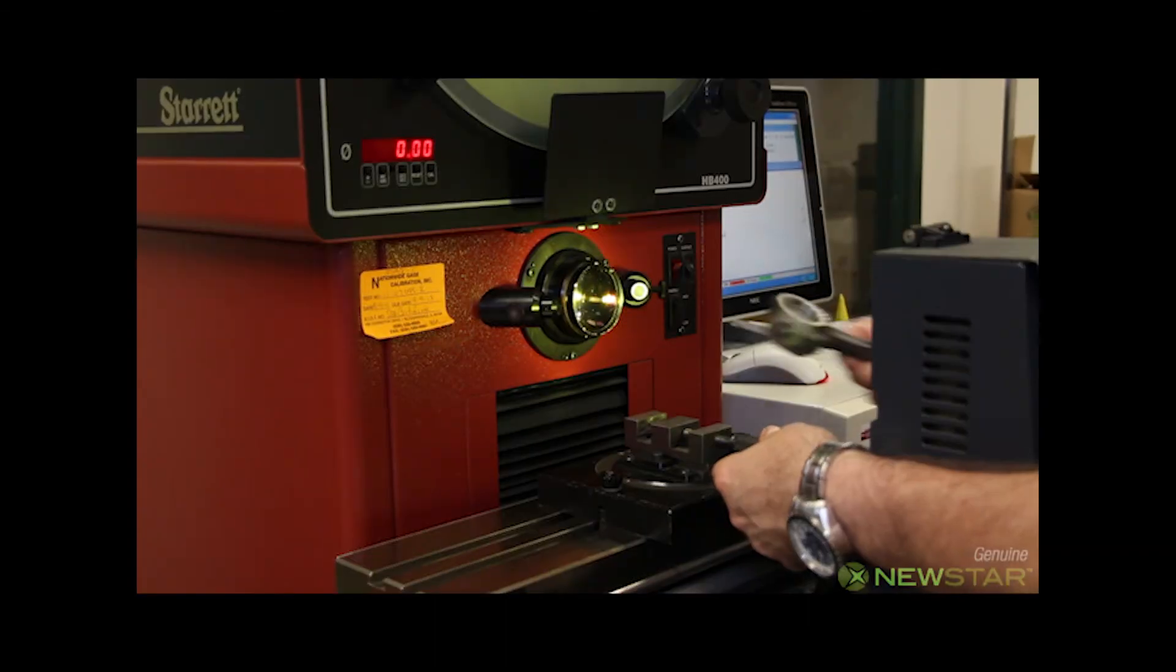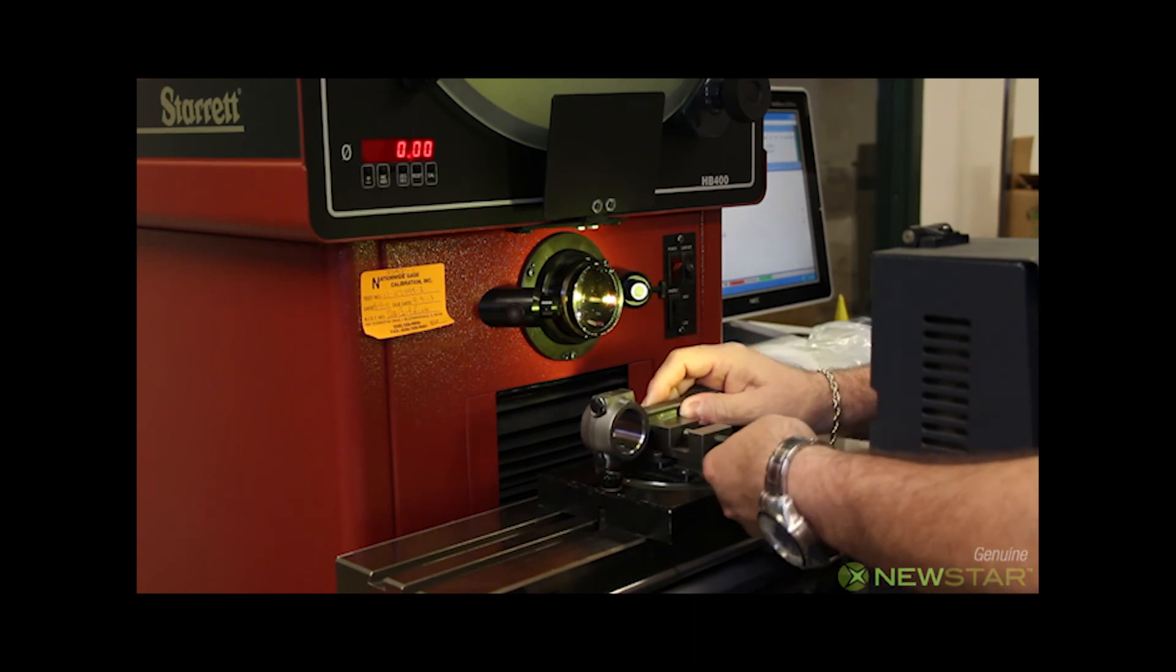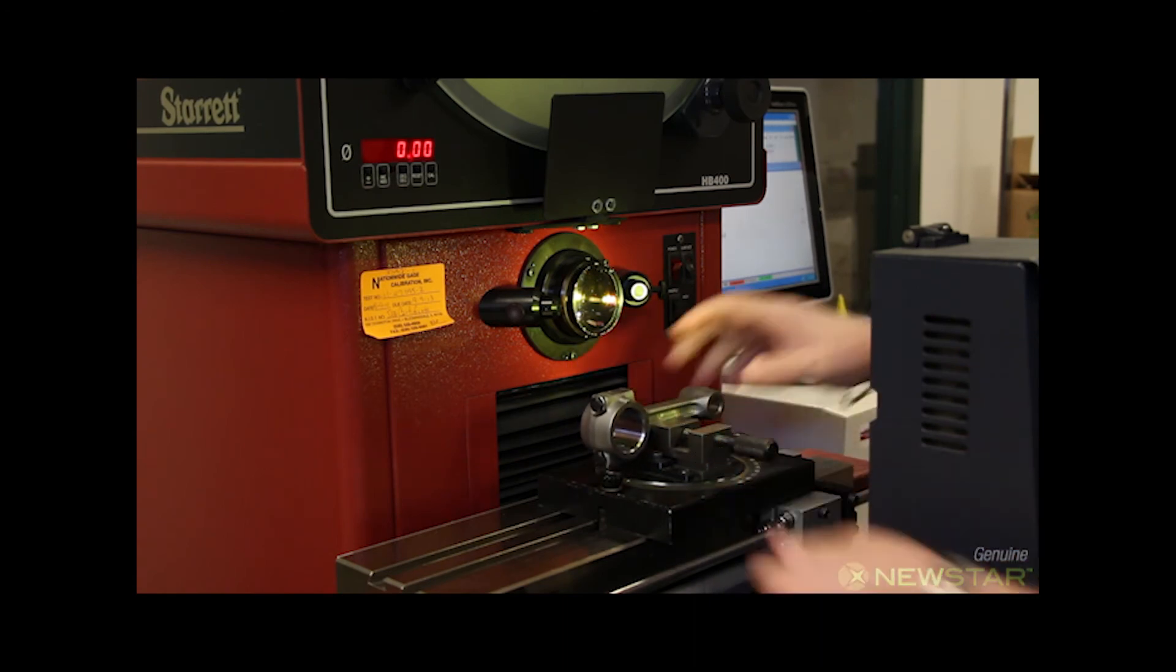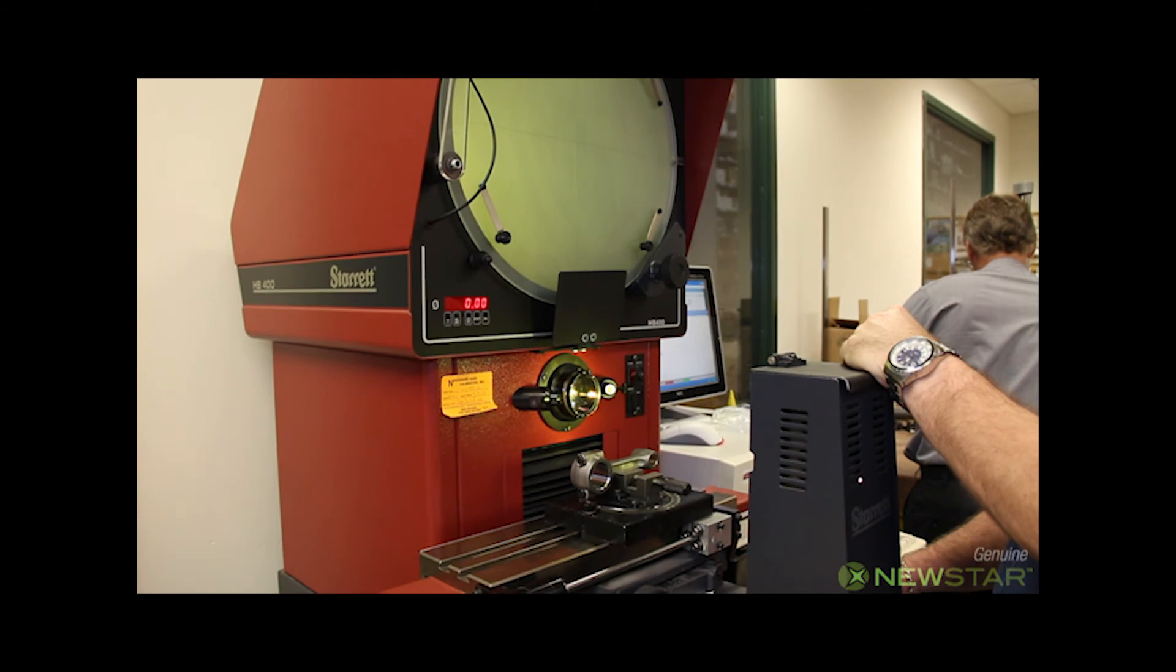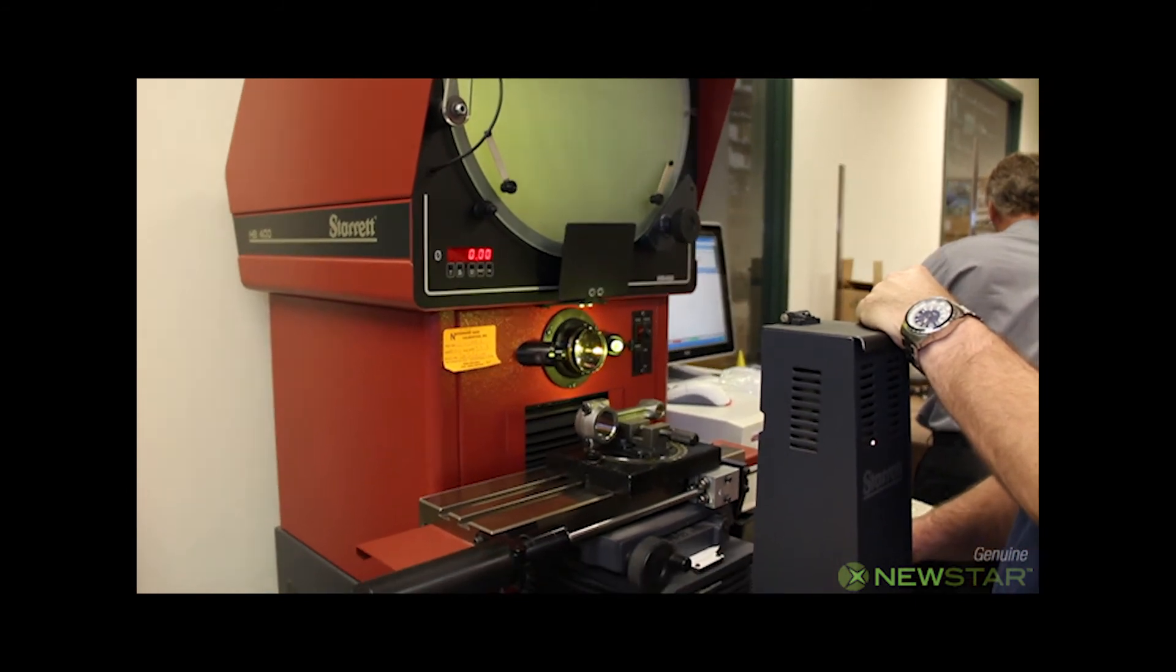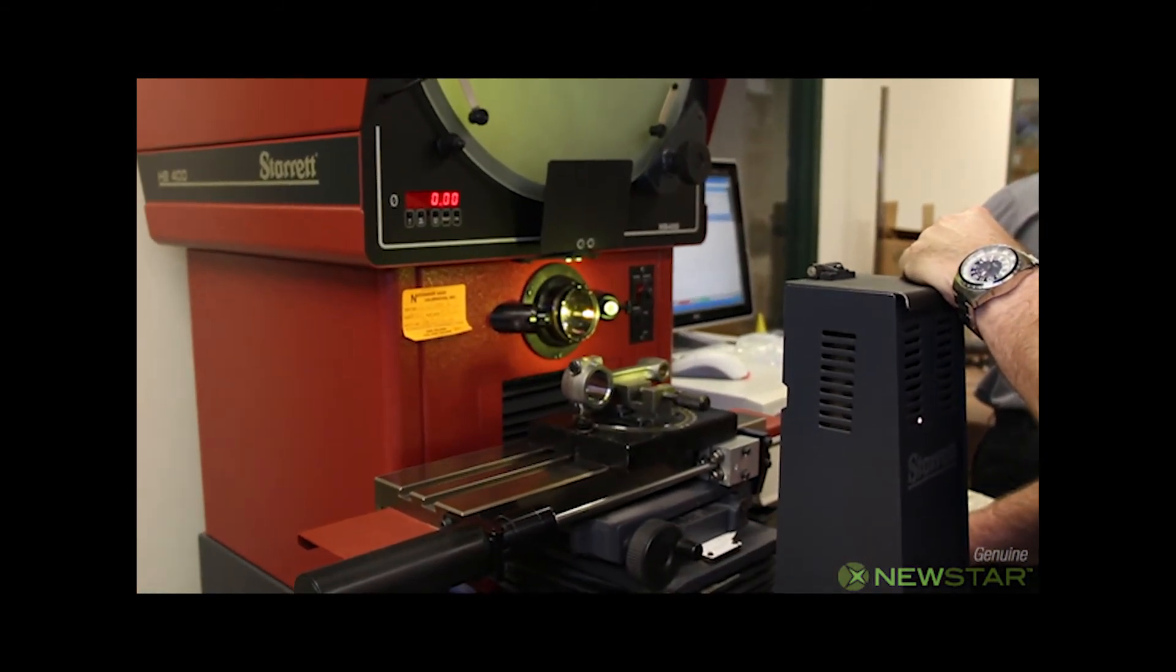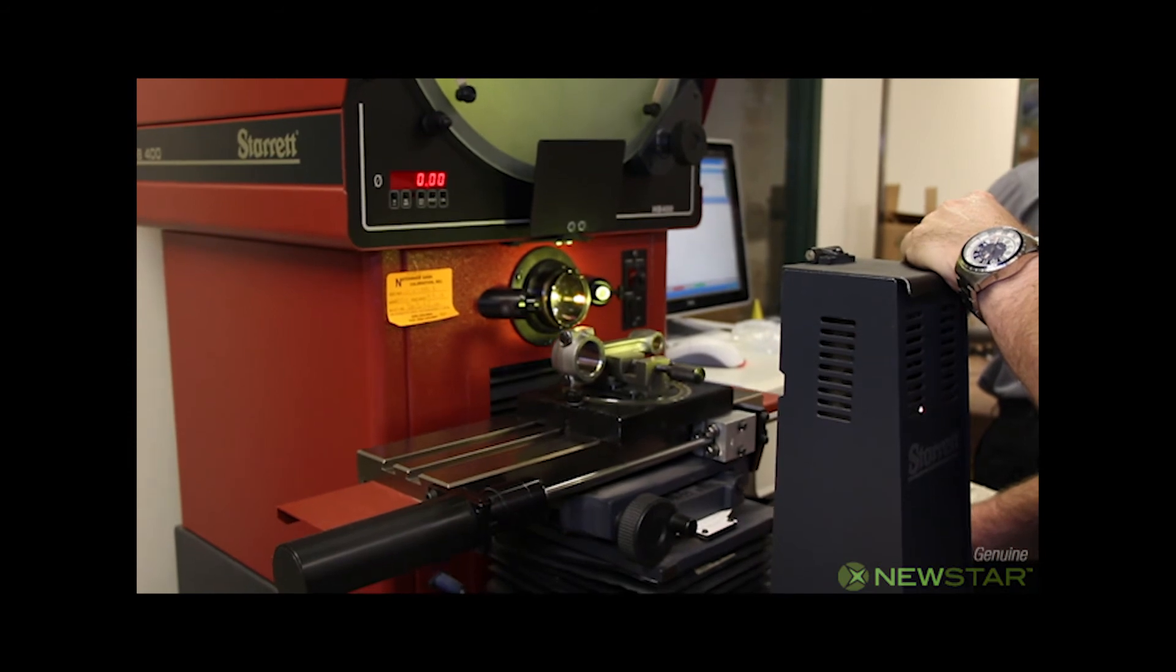This piece of equipment is an optical comparator. All of our QC equipment is computerized and we're using it in this case to check the straightness of the connecting rods used in our NS 750 air compressors.